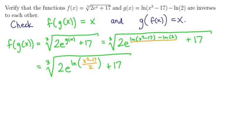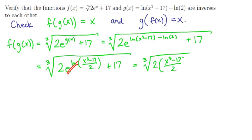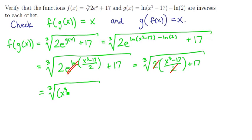Notice that you have e to the ln of an expression. Since e and ln are inverses, these two terms cancel. And so what we're left with is the cube root of 2 times the quantity x cubed minus 17 divided by 2, plus 17. But now the 2's cancel. And so what we're left with is the cube root of the quantity x cubed minus 17, plus 17.